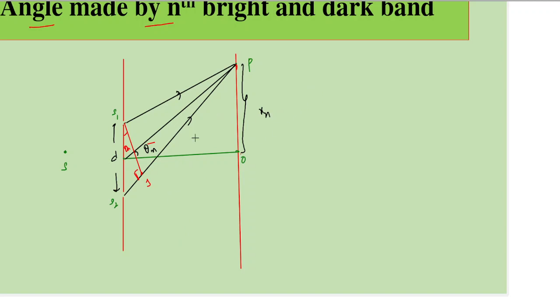Now if you look at triangle S1, S2, J, if we find sine Theta from the triangle, it is equal to S2J. But S2J is the path difference by the hypotenuse which is small d. Therefore, delta x is equal to d into sine theta n. So this is the path difference in terms of the angle made.